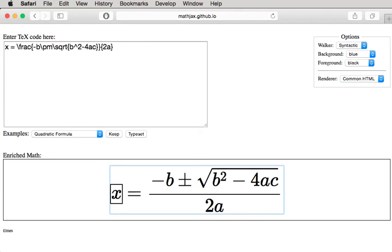2 times a. Great. So you heard that there is actually a times inserted in between. It's an invisible times, which is why it doesn't occur in the visual rendering. This is another example of the kind of information we are generating with the semantic enrichment.